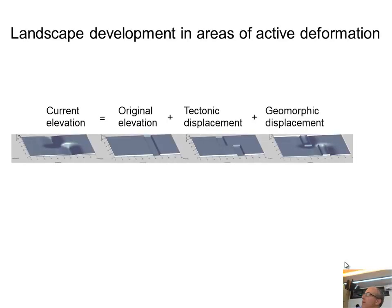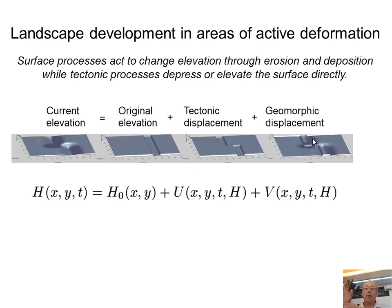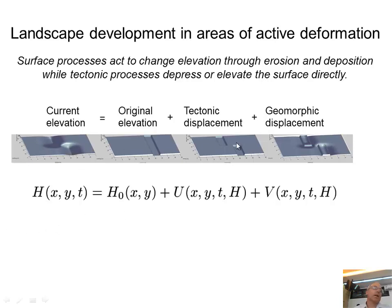Just as a reminder of this diagram: we see some topography that had some original shape, plus what happens tectonically, plus what happens geomorphically. In the case of the dragon's back, there's a strong geomorphic signal of erosion but also a strong tectonic signal of uplift — the topography is a real combination of the two. By contrast, offset stream channels are mostly tectonic displacement; we don't care much about erosion there.